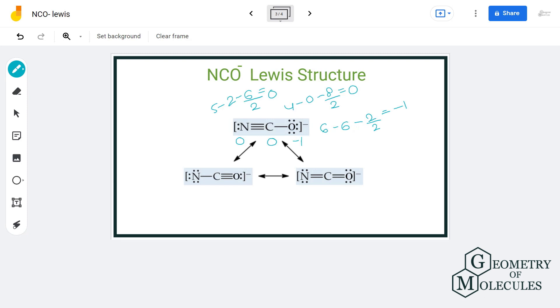Similarly, when we calculate the formal charge, we get the value of minus 2 on this nitrogen, 0 on carbon and plus 1 on this oxygen in this particular structure. For this structure we get the value of minus 1 on nitrogen, 0 on carbon and oxygen.